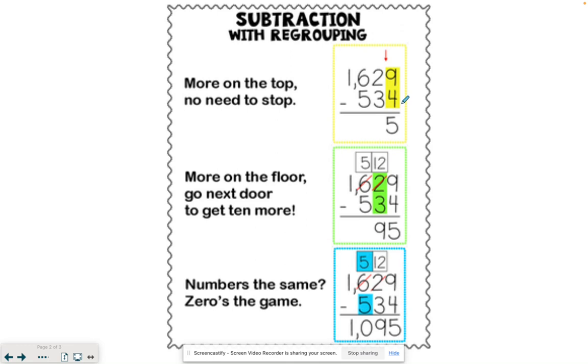Nine minus four gives us five. Now we move to the very next place value, which would be the tens place value. We take a look, it says two minus three. Well, two is not bigger so we need to go next door and get ten more. Remember each place value is ten times bigger than the one behind it.